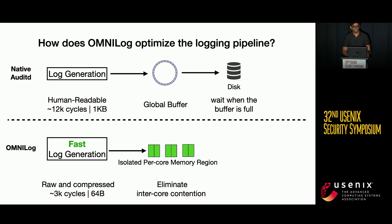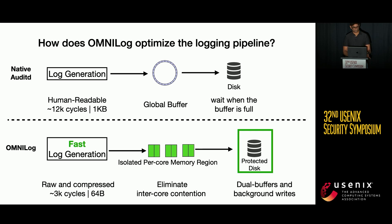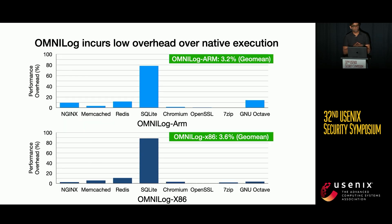These steps cumulatively optimize the pipeline to allow OmniLog to log all system calls. We prototyped OmniLog on ARM and x86 and analyzed the relative performance overhead over a native system with no logging, under a ruleset configured to cover all system calls. We find that OmniLog ARM incurs an overhead of 3.2% in geometric mean, and 3.6% geometric mean overhead on the x86 prototype, showing practical viability of OmniLog across multiple platforms.